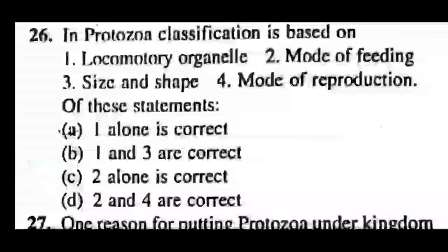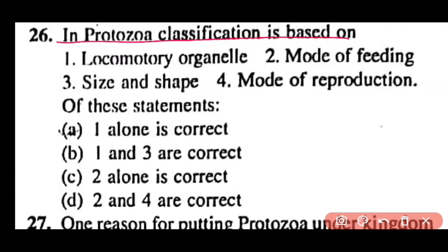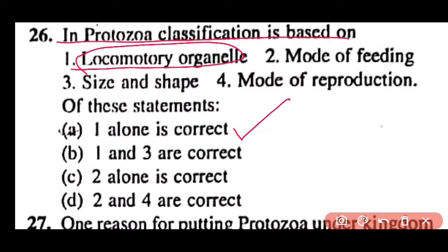Question 26: In protozoa, classification is based on (1) locomotory organelle, (2) mode of feeding or size and shape, (3) mode of reproduction — which statement is correct? Correct answer is option A. The first statement alone is correct: locomotory organelle is the basis of classification of protozoa.